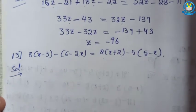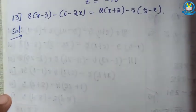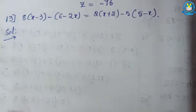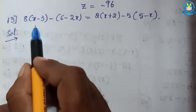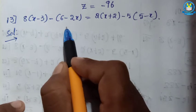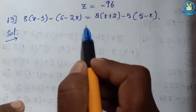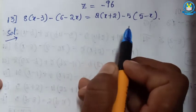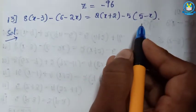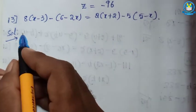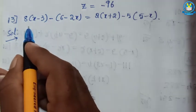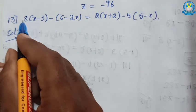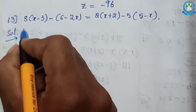Now the 13th question: 8 into (x minus 3) minus (6 minus 2x) equal to 2 into (x plus 2) minus 5 into (5 minus x). This is also the same — one variable multiplied by 2 or more variables. Here positive value into positive value: positive. 8 into x gives 8x.